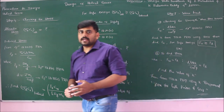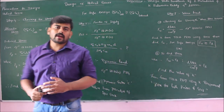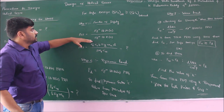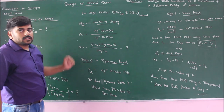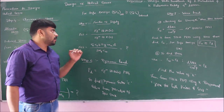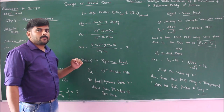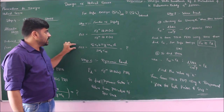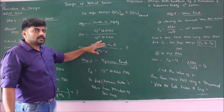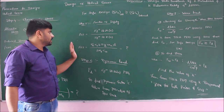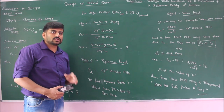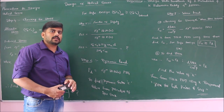Moving on to step 5 — to find the factor of safety. Factor of safety is given by the ratio of equation 12.24A to equation 12.8A. Substitute and rearrange to get the equation in simplified form. Substitute all the values and simplify to get the factor of safety. The factor of safety should always be greater than 1.